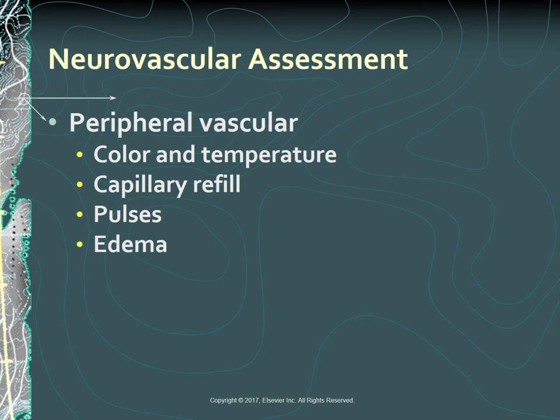In your peripheral vascular assessment, assess the extremity's color—pink, pale, or cyanotic—and temperature, whether hot, warm, cold, or cool. Pallor or a cool, cold extremity below the injury could indicate arterial insufficiency. A warm, cyanotic extremity could indicate poor venous return. Assess capillary refill by blanching of the nail bed—a compressed nail bed should return to its original color within three seconds. Compare pulses on both the unaffected and injured extremity to identify differences in rate or quality.